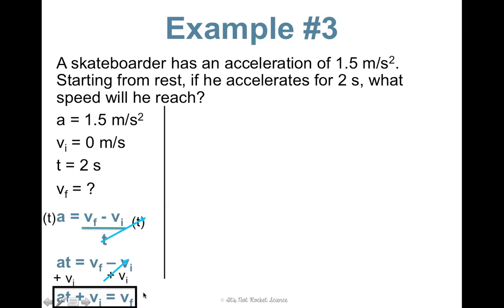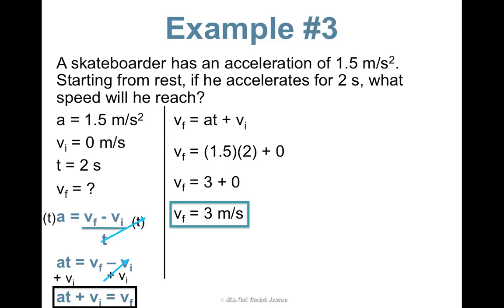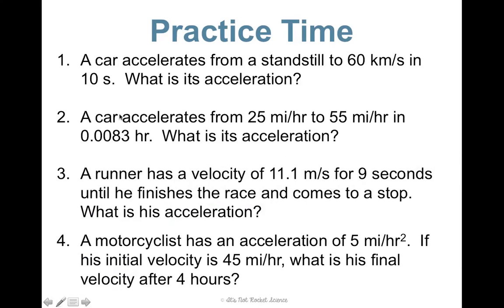So just flipping how I wrote that, vf equals at plus vi. Now I can plug in. So my a was 1.5, and my time was 2, plus my vi, which was 0. Do your multiplication first, according to order of operations. 1.5 times 2 is 3, and then you're going to add 0, so your final velocity is 3 meters per second. And you can always check to make sure you did it right by plugging in these values into the original equation and seeing if you get that 1.5. So I would love for you to pause now and practice some of these problems. And then when you're ready, press play again, and you'll get to see the answers.